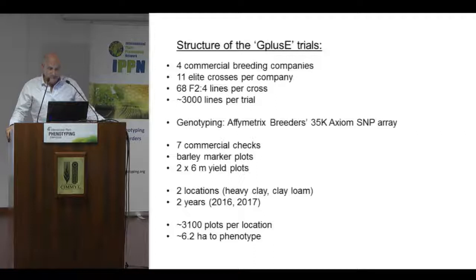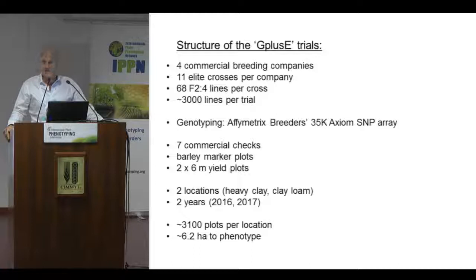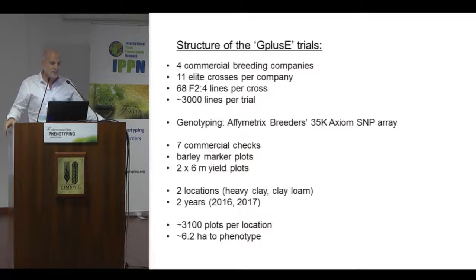Genotyping is done with an Affymetrix 35K SNP chip. We also include seven commercial variety checks and a few barley marker plots so we don't get lost in the middle of 3,000 plots in the field. These are drilled to 2x6 meter yield plots at two locations on contrasting soil types, and the experiment is conducted over two years. That gives us 3,100 plots per location and 6.2 hectares to phenotype.